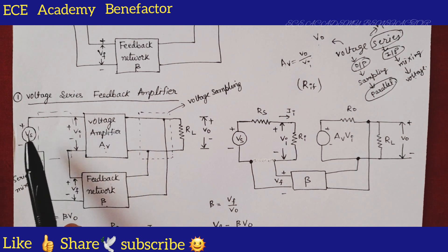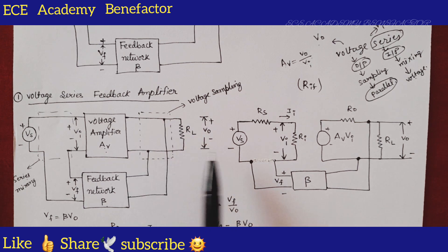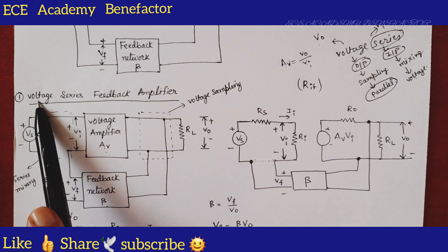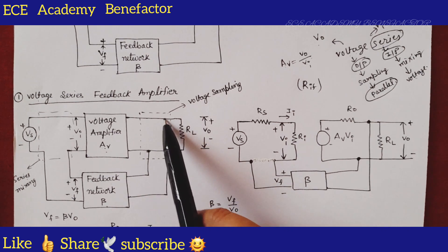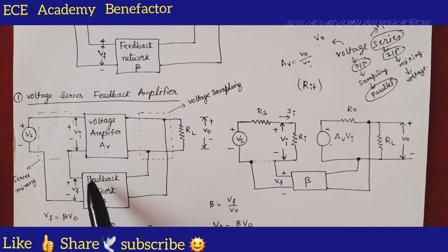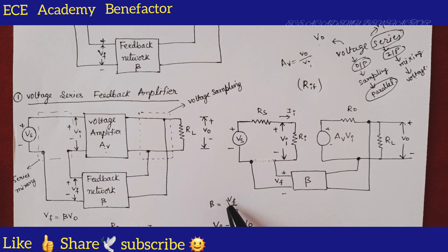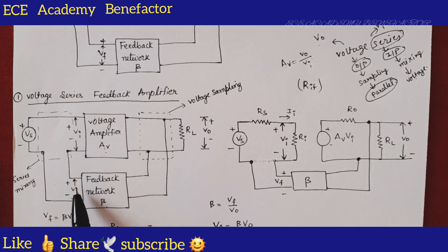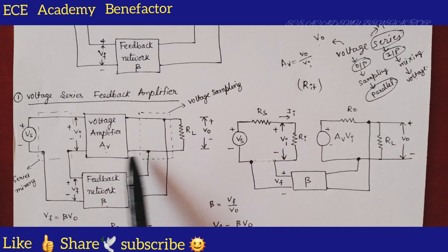A voltage amplifier will have a voltage source, so we connect a voltage source to the voltage amplifier and observe the output across the load resistor RL. We have drawn the equivalent circuit of the voltage amplifier: at the input side we have the Thevenin's equivalent circuit, and at the output also a Thevenin's equivalent circuit. The voltage source Vs has source resistance Rs. Ri is the input resistance, Ii is the input current, Vi is the input voltage. At the output side we have voltage generator AV·Vi, with output resistor Rnaught and load RL. This is voltage sampling series mixing.